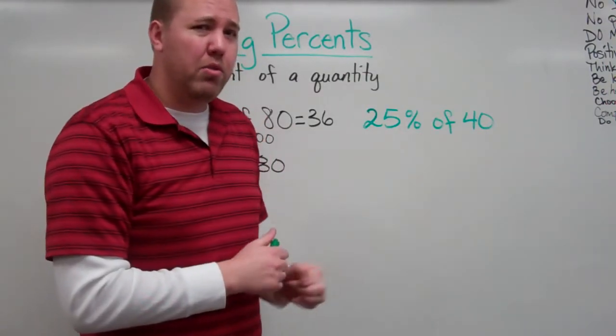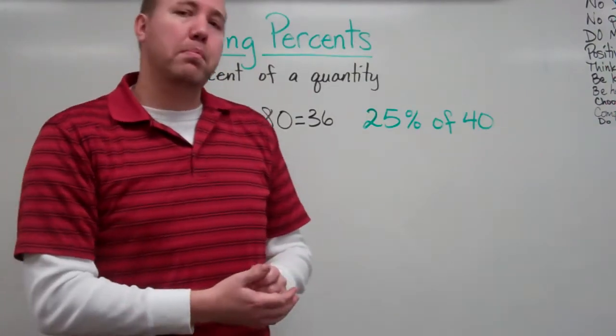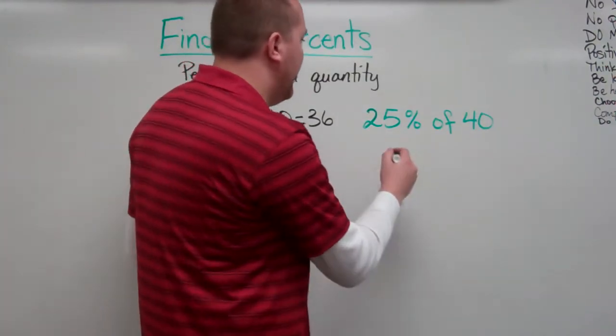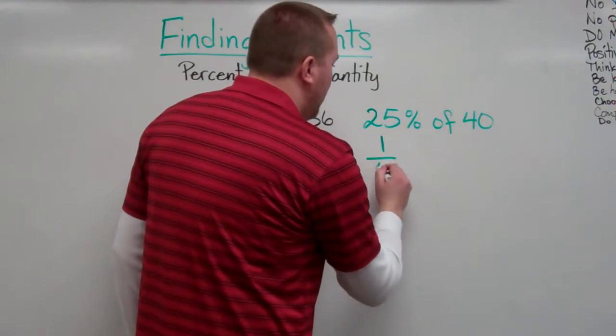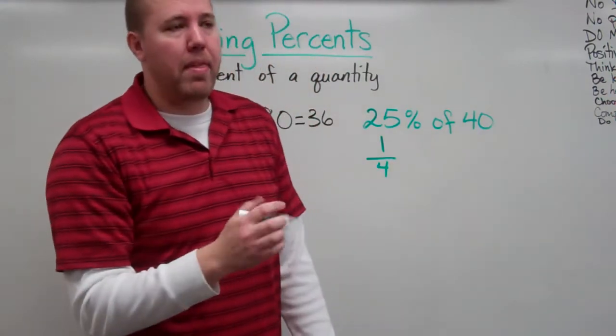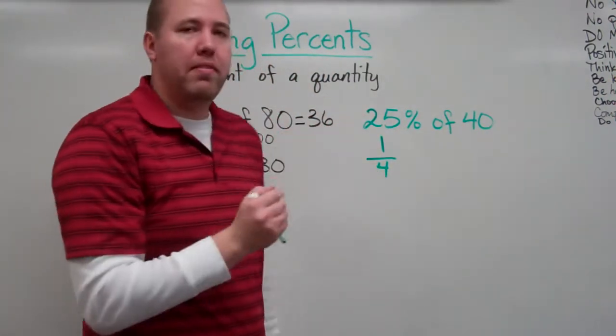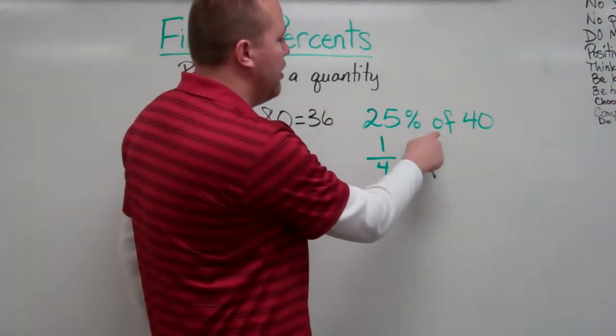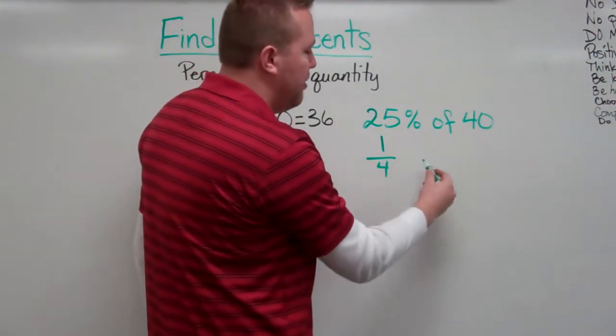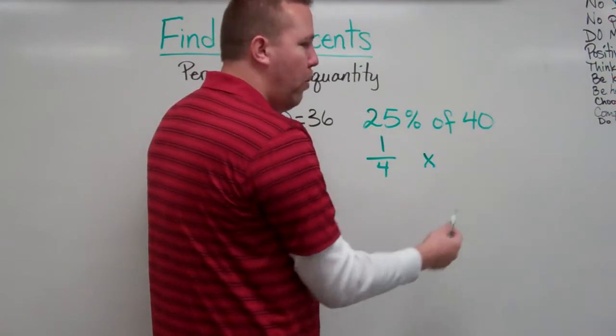But, I know something about 25%. That simplifies to a very convenient fraction in this case of one-fourth. 25 hundredths simplifies down to one-fourth. So, as we have one-fourth of, still represents, times 40.